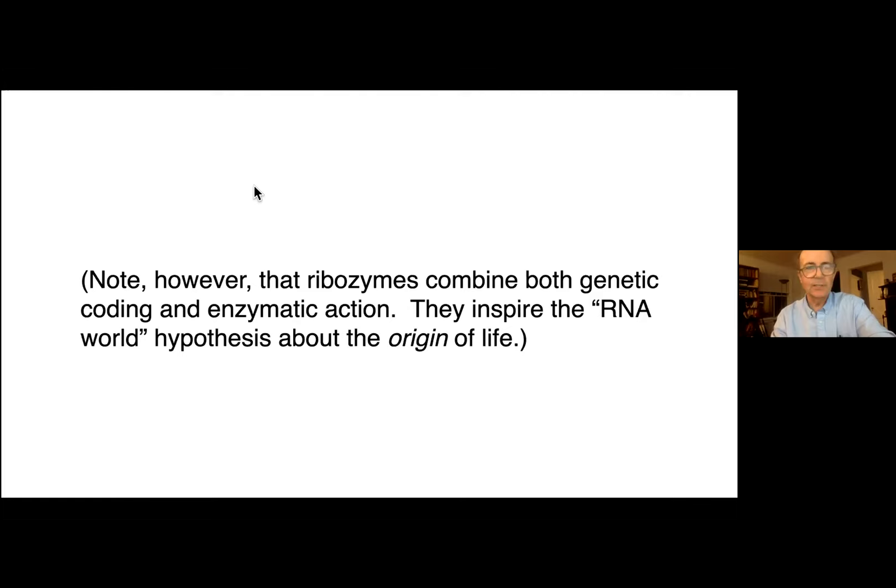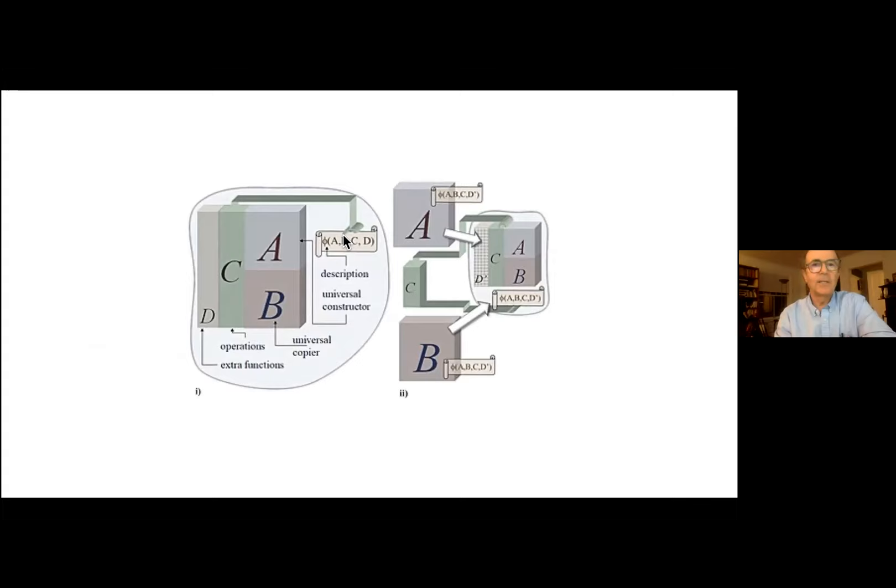there are the advantages that von Neumann realized of separating the instructions for making the machine from the actual machine have been beautifully realized in modern biology, because the instructions are in the DNA, buried in the nucleus, and the cell machinery is quite separate. And I won't go through the details of this. But basically, the script has to be copied first. And then the machinery can copy the script. It can also make little changes. And so you can have self-reproduction with variation.